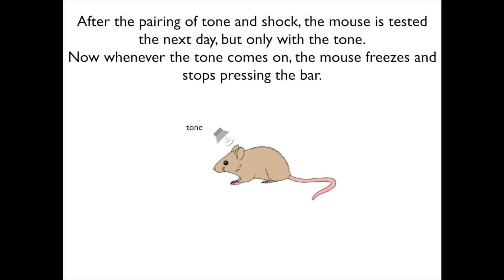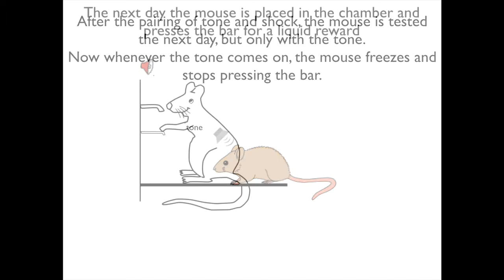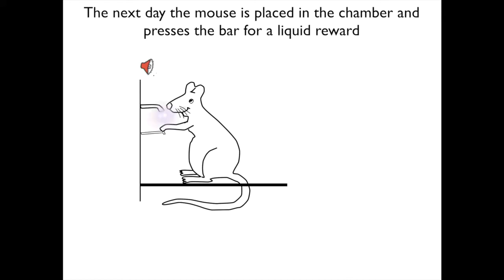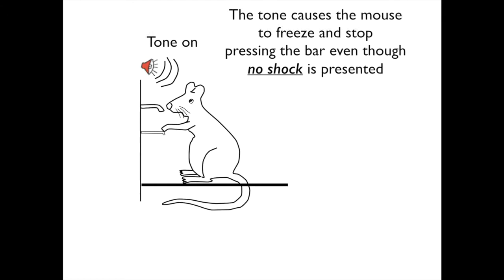After the pairing of tone and shock, the mouse is tested the next day but only with the tone. Now whenever the tone comes on, the mouse freezes and stops pressing the bar. Here he is the next day, pressing the bar for a liquid reward. The tone comes on and causes the mouse to freeze and stop pressing the bar, even though no shock is presented.